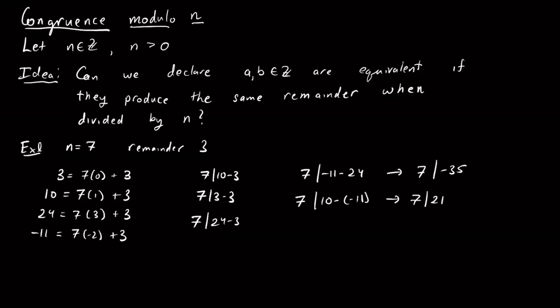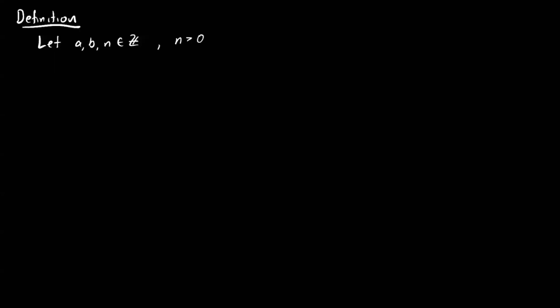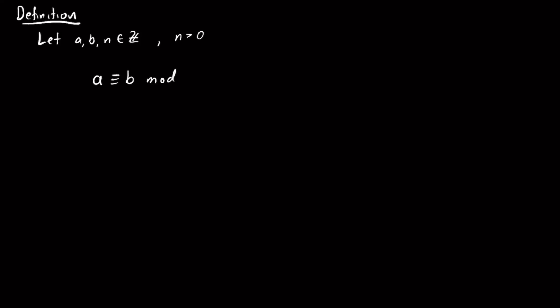So what I might notice is that 7 divides the difference of any two of these numbers. And so let's try to formulate a definition based on this. I'll take a, b, and n to be integers, with n positive. And I'll say that a is congruent to b modulo n if and only if n divides a minus b. This is our definition.